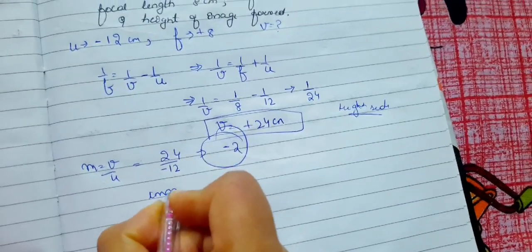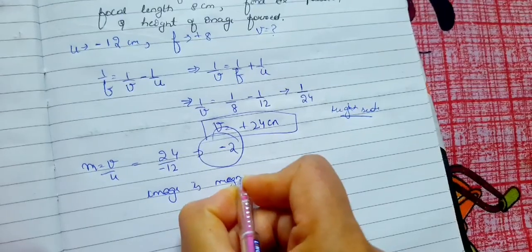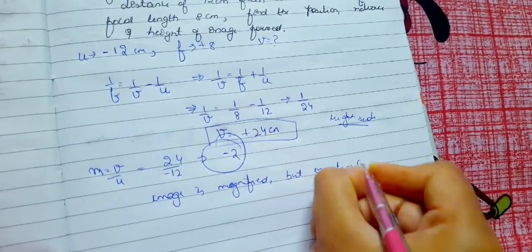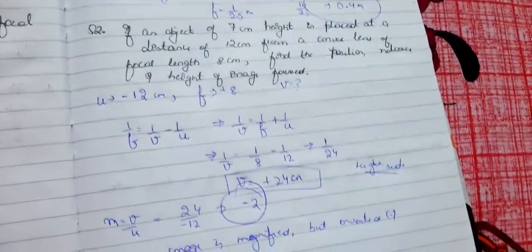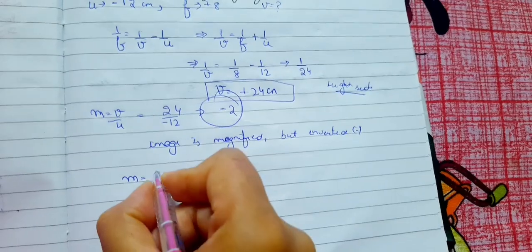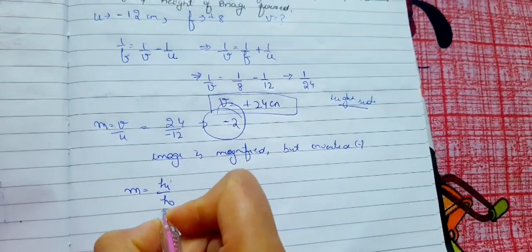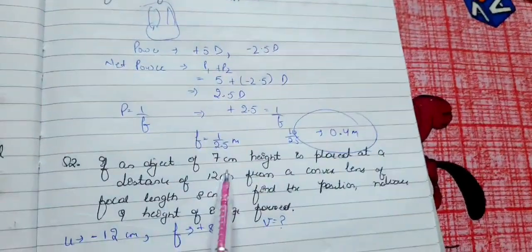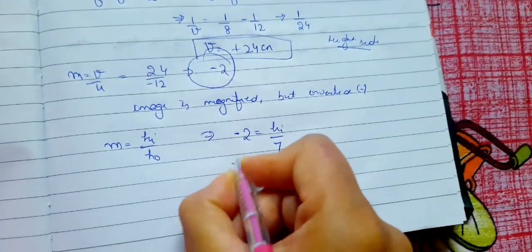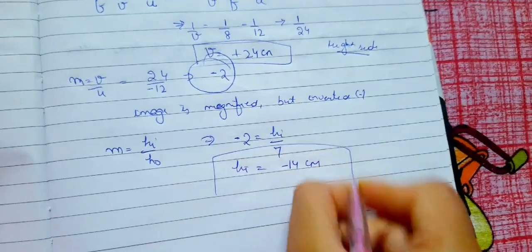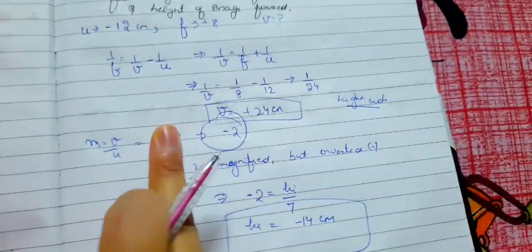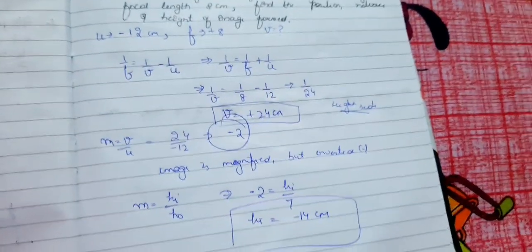Magnification = -2 means the image is magnified (larger than object) but inverted due to the negative sign. Now height of image: m = image height / object height. Object height = 7 cm, magnification = -2. So -2 = image height / 7, therefore image height = -14 cm. The negative sign indicates it is an inverted image. So we have the image height, magnification, and image distance.